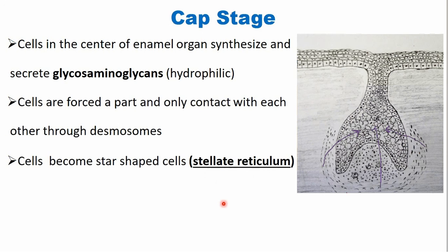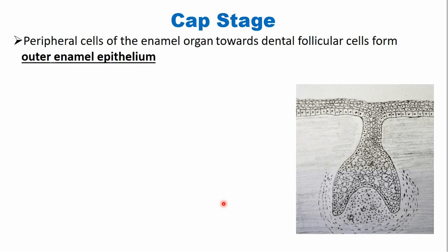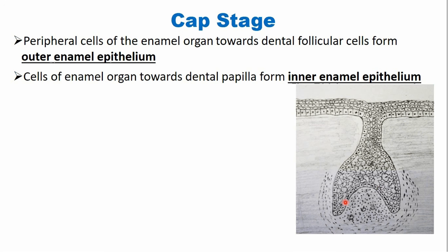There are two other cell types in the enamel organ. Cells lining the peripheral or outer part of the enamel organ — towards the dental follicle cells — are known as outer enamel epithelium, separated from the dental follicle by a basement membrane. Cells lining the inner surface of the enamel organ towards the dental papilla are called inner enamel epithelium, also separated from the dental papilla by a basement membrane. So the enamel organ contains stellate reticulum cells, outer enamel epithelium, and inner enamel epithelium.